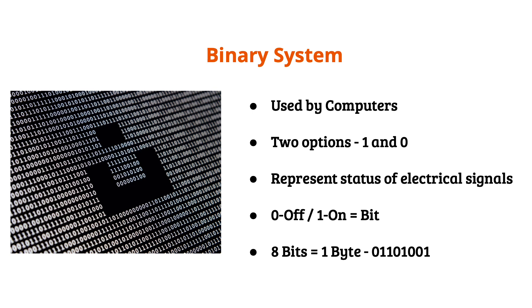Each individual one or zero is called a bit, and a group of eight bits is called a byte. As you combine more and more ones and zeros together, you get more complex code that tells the computer what to do.